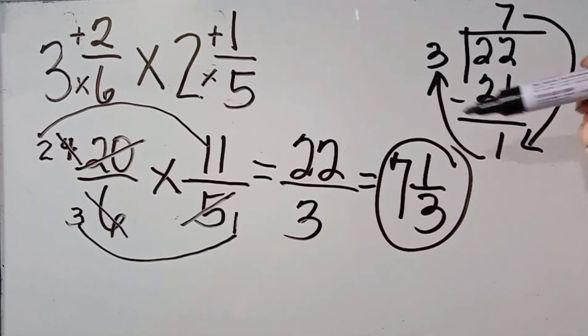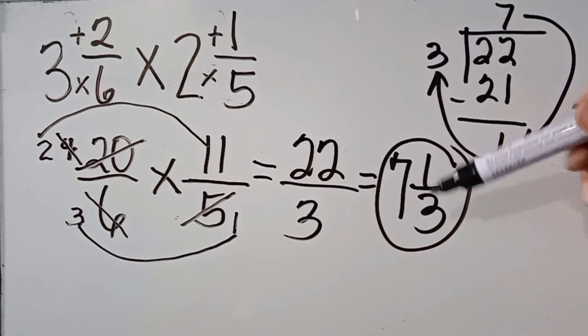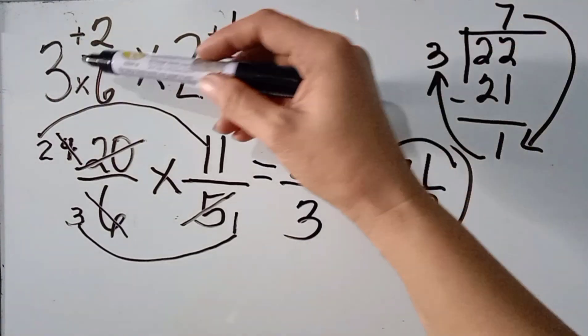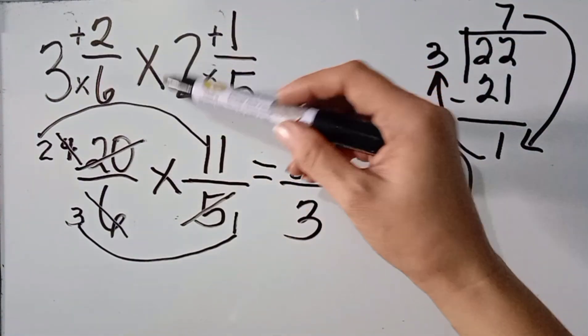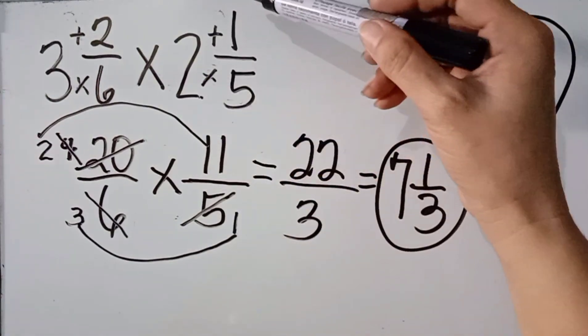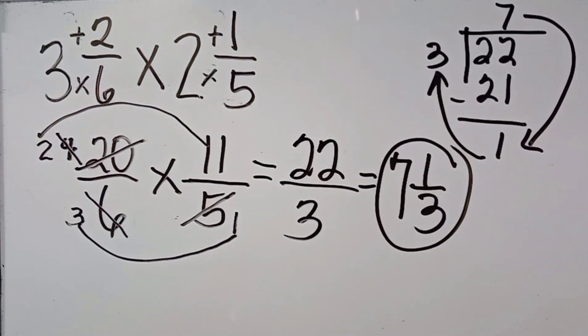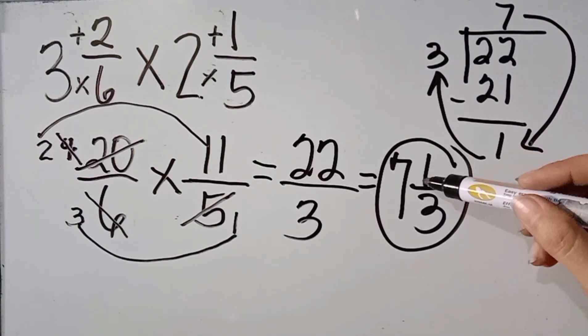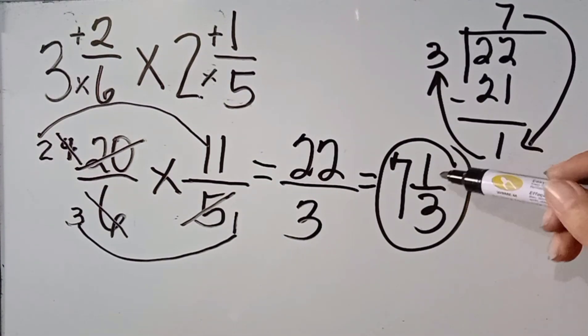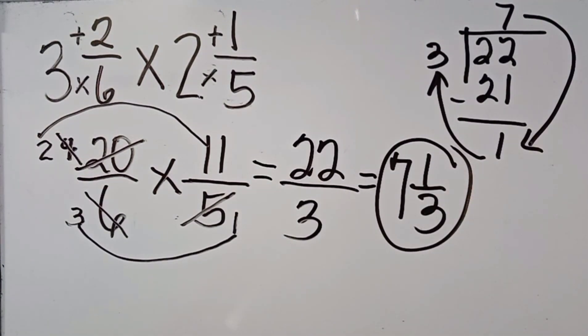So, that's it. The product of 3 and 2 sixth times 2 and 1 fifth is 7 and 1 third.